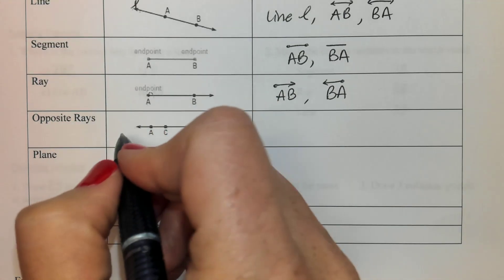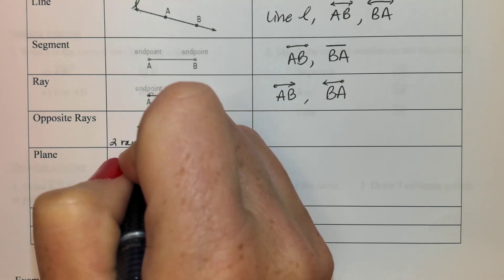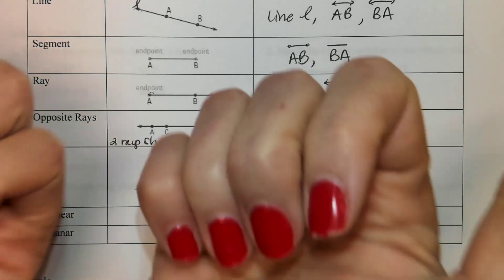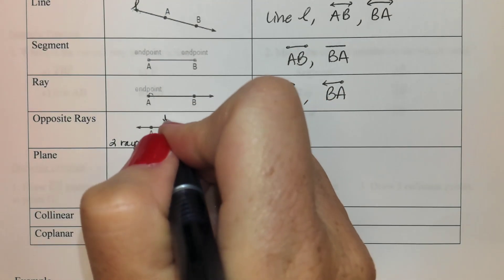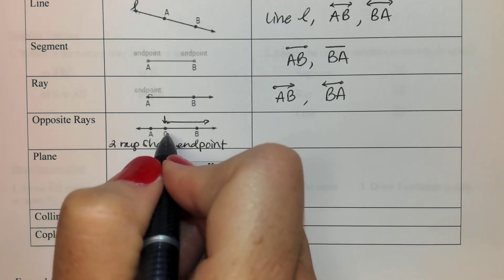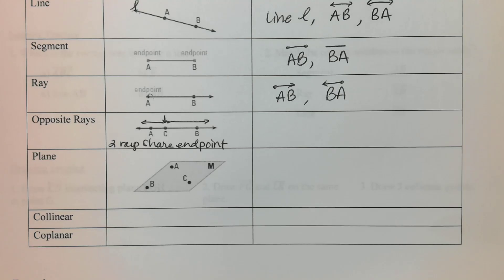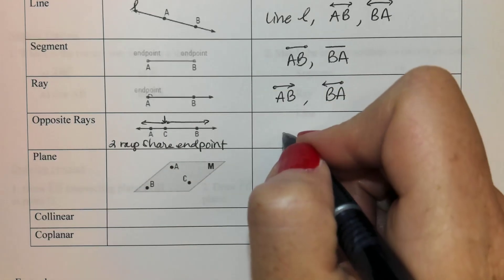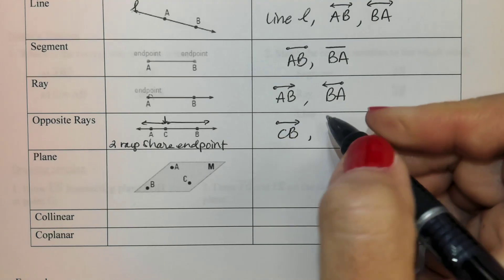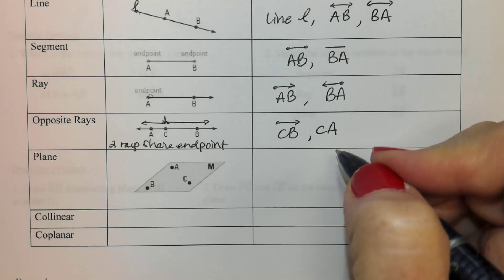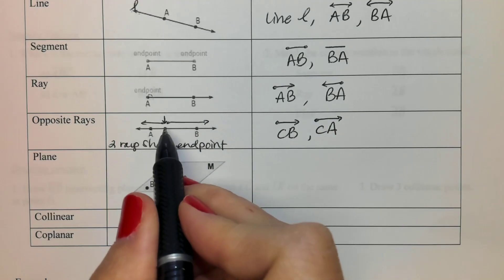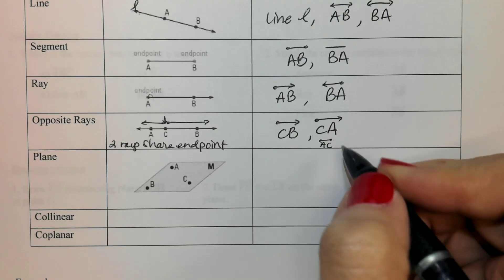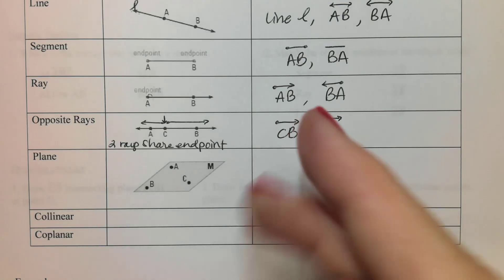Next we've got opposite rays — just two rays that share an endpoint. They meet in the middle and go in opposite directions. C is in the middle, so we're talking about the ray from C to B and the ray from C to A. How we name them: C to B with dot on C and arrow on B, and then C to A with dot on C and arrow on A. You could also write it as AC as long as your dot is above C and your arrow is above A.